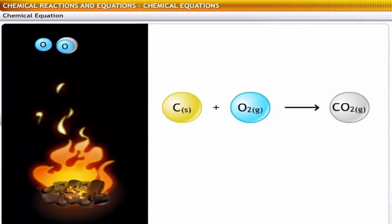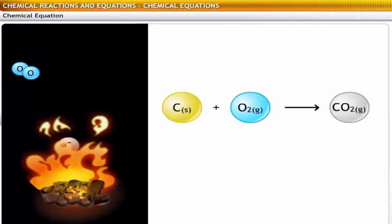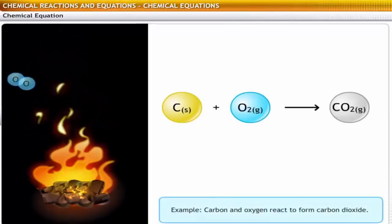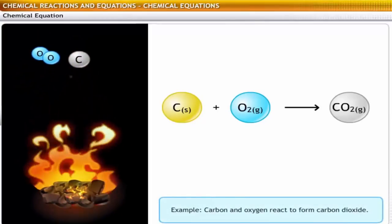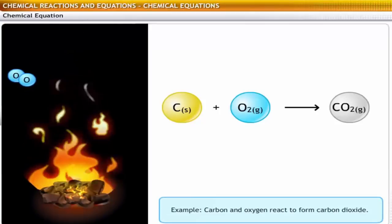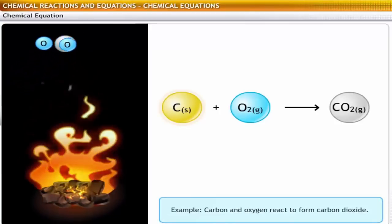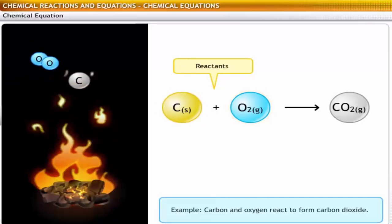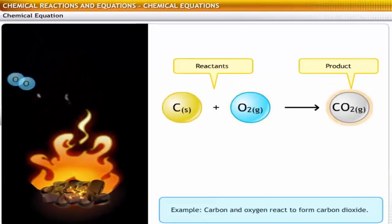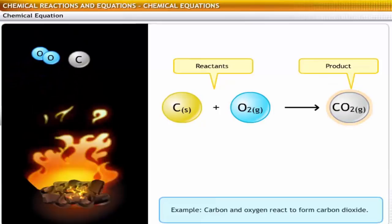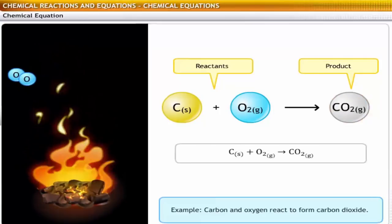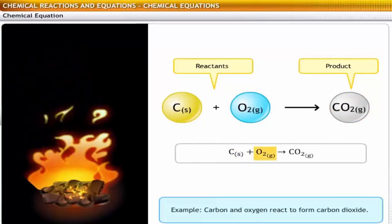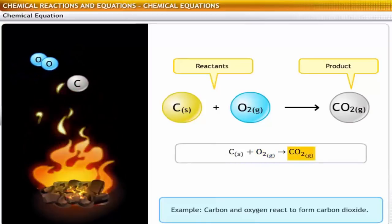Let's take another example that involves two substances. In the burning of coal, carbon reacts with oxygen to form carbon dioxide. In this reaction, carbon and oxygen are the reactants and carbon dioxide is the product. The chemical equation for this reaction is as shown. Solid carbon reacts with oxygen gas to form carbon dioxide gas.